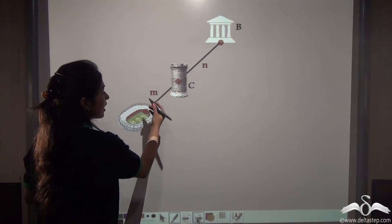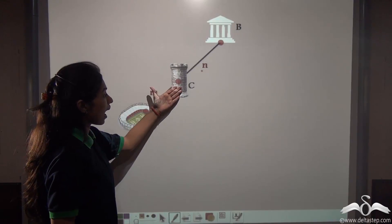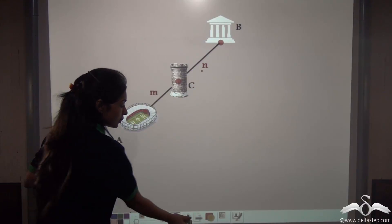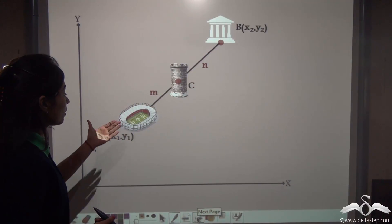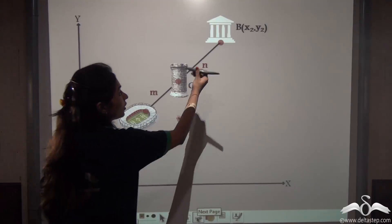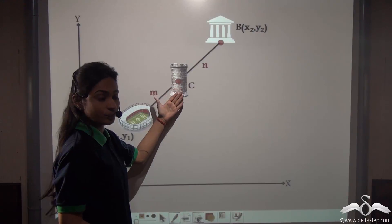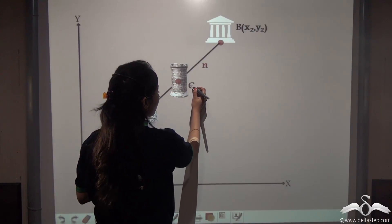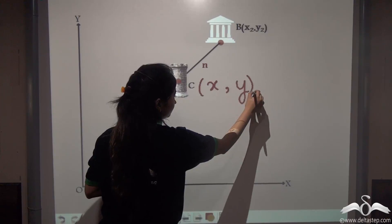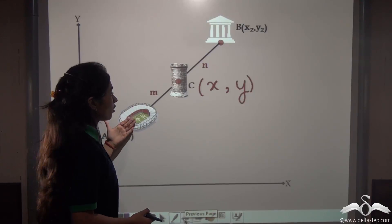The ratio M is to N represents the distance from the stadium to the tower as M, and from the tower to the white building as N. We have simplified the image: the stadium is A, the tower is C, and the white buildings are B. The coordinates of the stadium are (x1, y1) and the coordinates of the building are (x2, y2), but the tower's coordinates are unknown — let us assume the coordinates of C, the tower, are (x, y). Now let us construct horizontal and vertical perpendiculars from A, B and C.